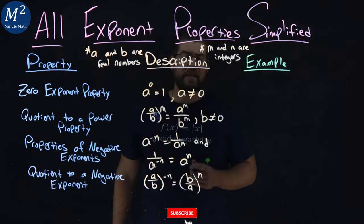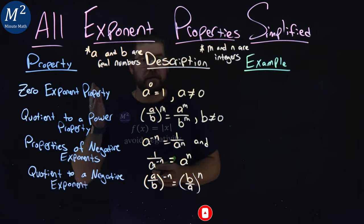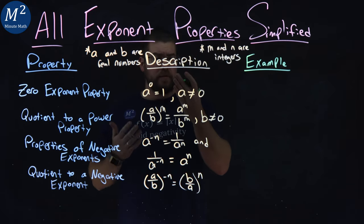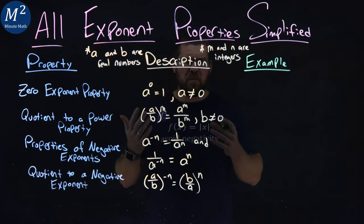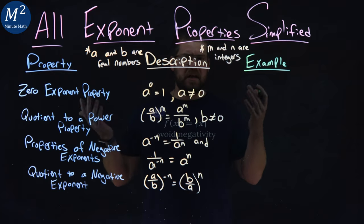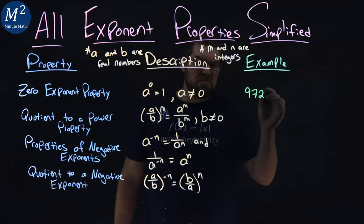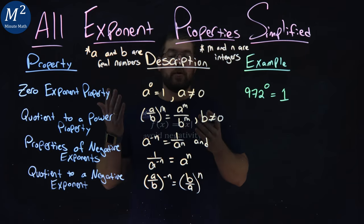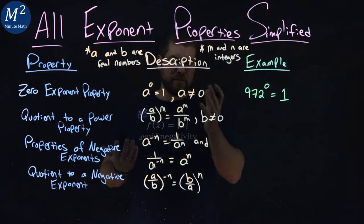Now we have four more properties to review. The first is the zero exponent property: a to the zero power equals one, where a is not equal to zero. A can be any real number — for example, 972 raised to the zero power is just one. Any real number raised to the zero power equals one, as long as a itself is not zero.